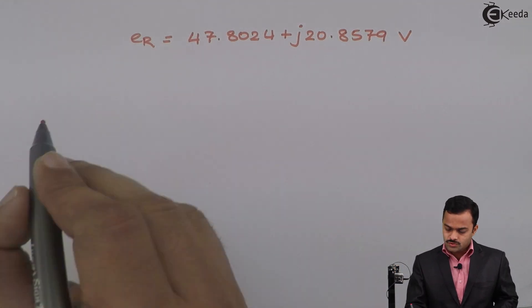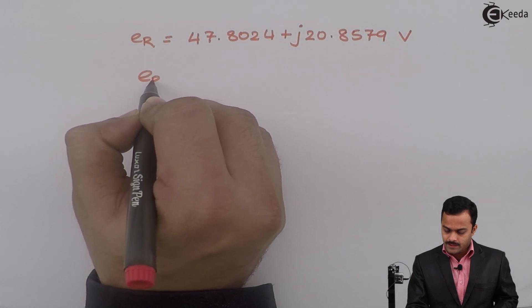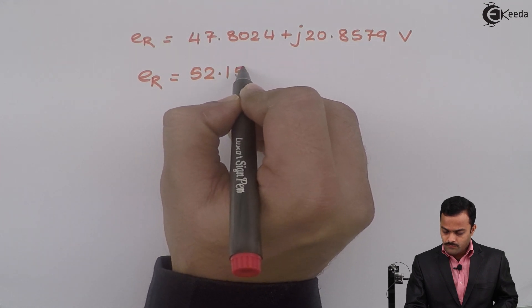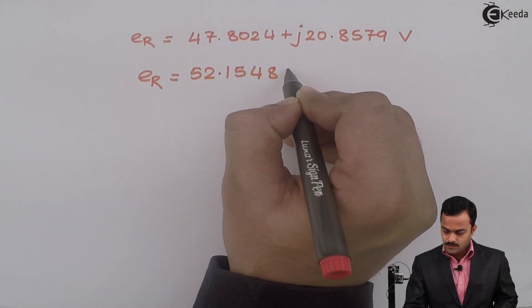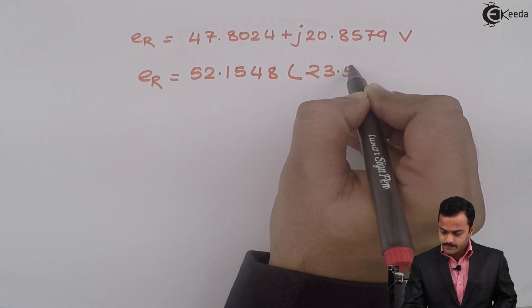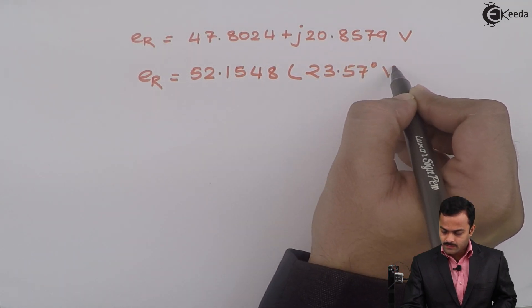But what we want is this in polar form. So in polar form I will get ER as 52.1548 at an angle 23.57 degrees volt.